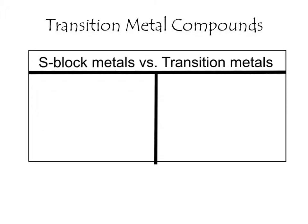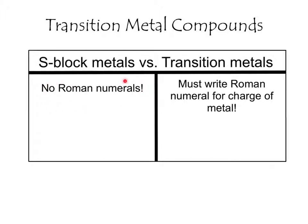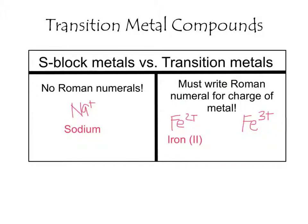Just an overall recap: the metals found in the S block versus the metals found in the transition metals differ in naming. The S block requires no Roman numerals, while the transition metals require Roman numerals for the charge. So when we write Na+, you just write sodium. But for transition metals like Fe2+ and Fe3+, you write iron with Roman numeral 2, and iron with Roman numeral 3.